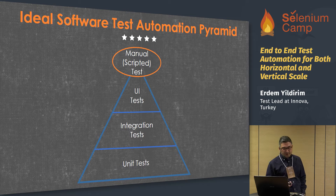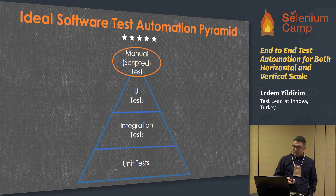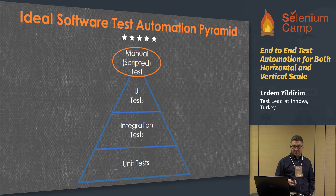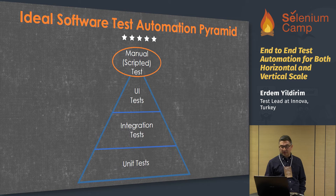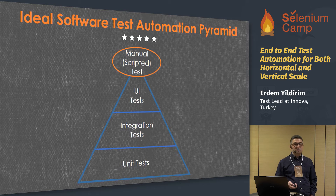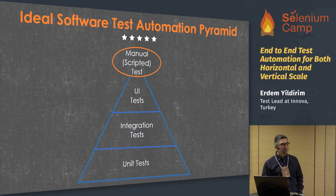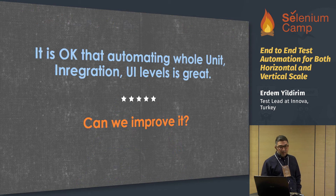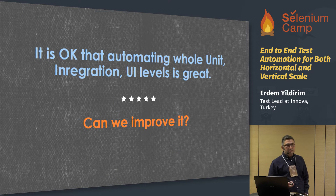This is the famous ideal software test automation pyramid. A unit is defined as the smallest testable part of an application, and each test case is independent from the others. Integration testing tests the integration or interfaces between components, systems, or hardware. UI test, also called acceptance test, means testing from the user perspective and validating requirements and user stories. At the top, some limited manual testing activity is advised.